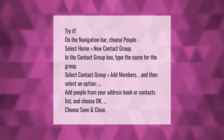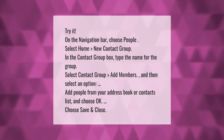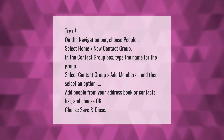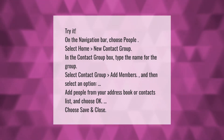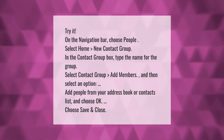On the navigation bar, choose People, select Home, then New Contact Group. In the Contact Group box, type the name for the group. Select Contact Group, then Add Members, and select an option to add people from your address book or contacts list and choose OK. Choose Save and Close.